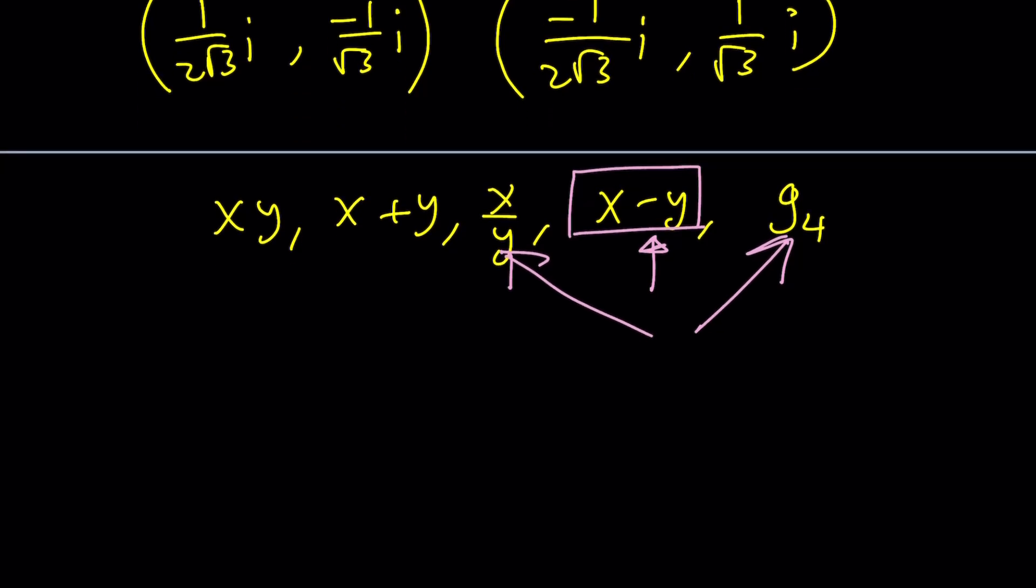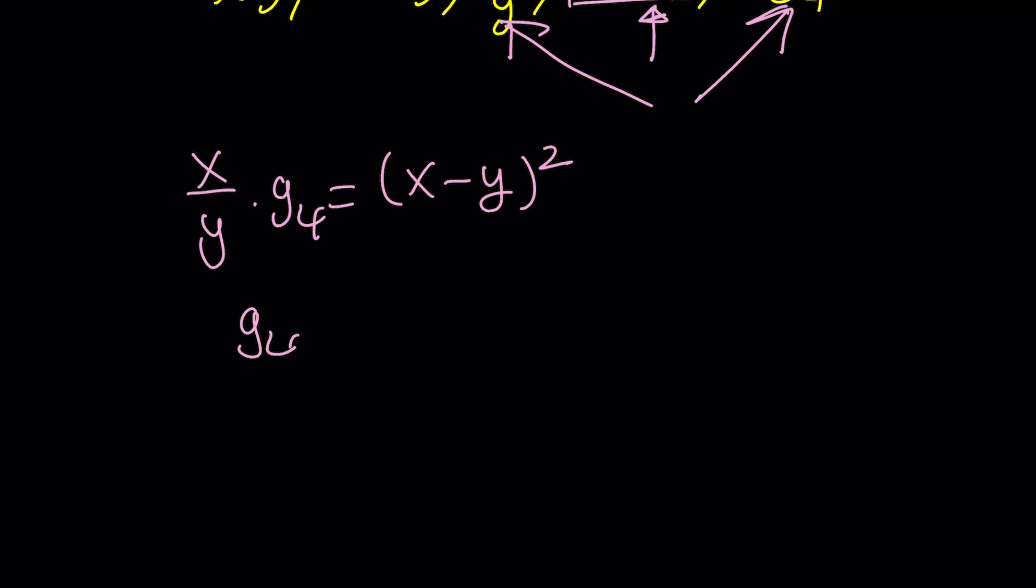But we do know that the third term is x over y. Multiply by g sub 4 is equal to x minus y squared, because that's in the middle. And then from here, g sub 4 can be written as x minus y squared, multiplied by y, divided by x. So, that's the answer, pretty much.